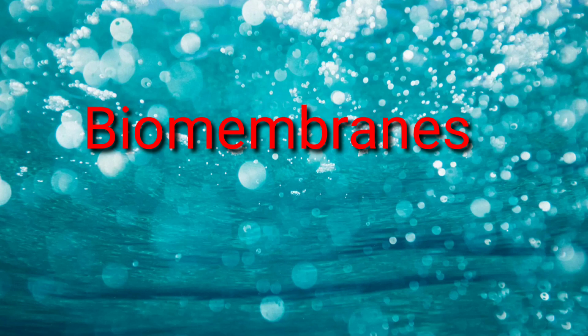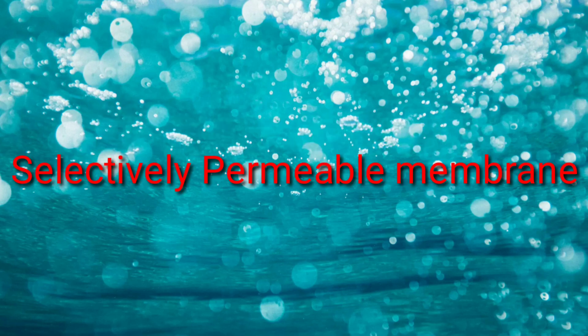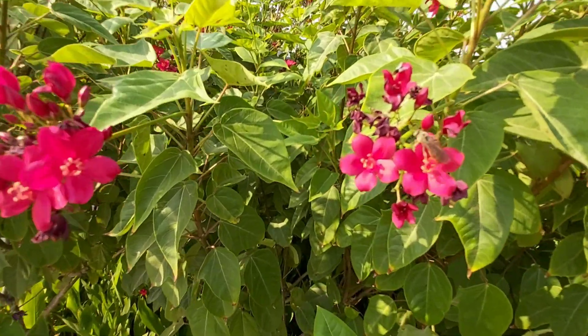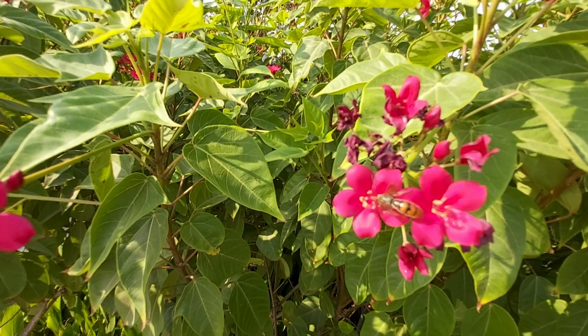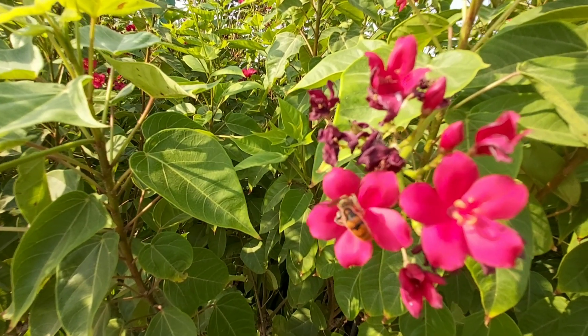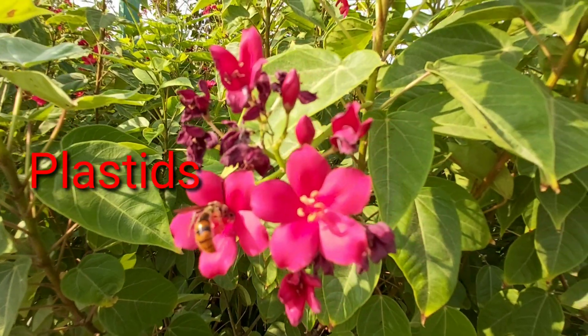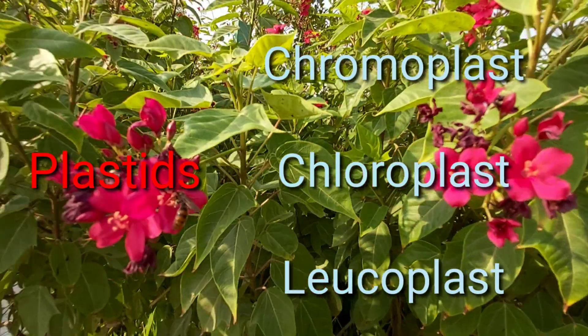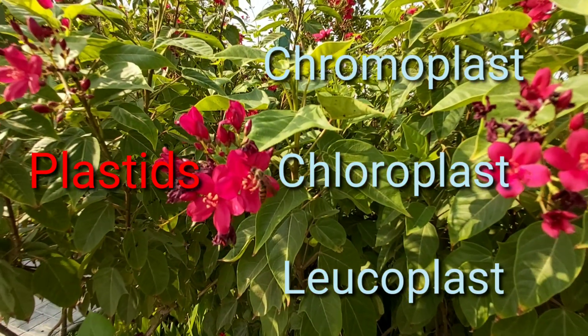The cell membrane is selectively permeable. The plastids in plant cells are of three types: chromoplast, chloroplast, and leucoplast.